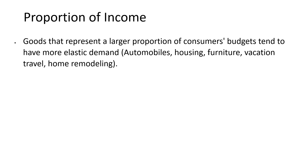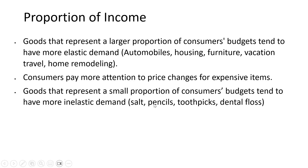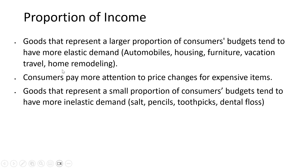Finally, proportion of income is another determinant. Goods that represent a larger proportion of consumers' budgets tend to have more elastic demand. Goods that represent a small proportion of consumers' budgets tend to have more inelastic demand. Salt, pencils, toothpicks, dental floss — these don't take up a large fraction of household budgets. So if the prices of these items were to increase, it's not going to break the budget, and consumers are going to be less price sensitive for these items.